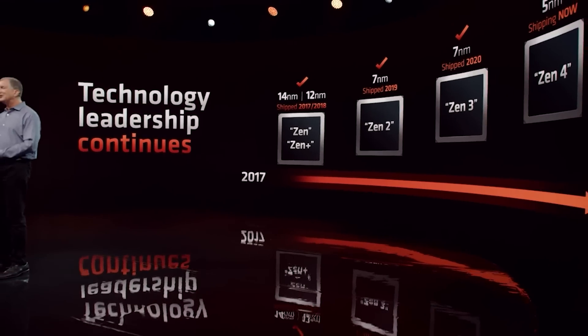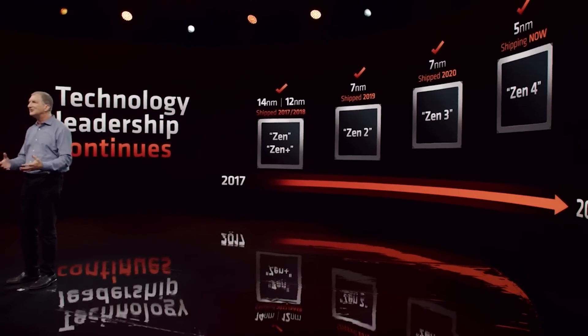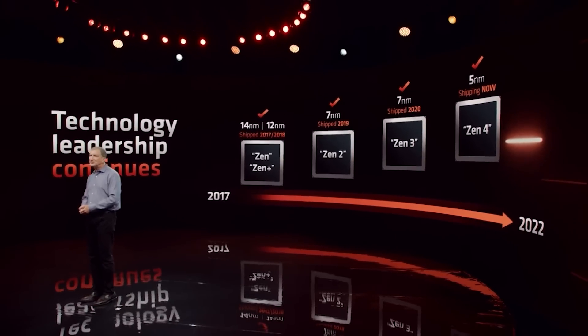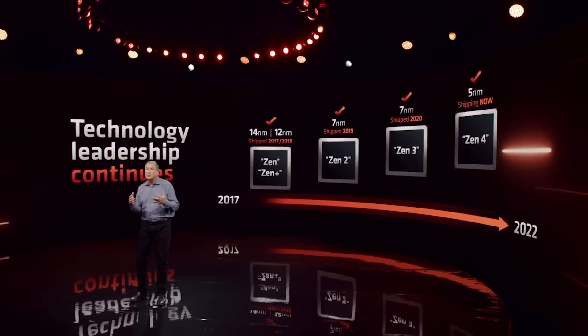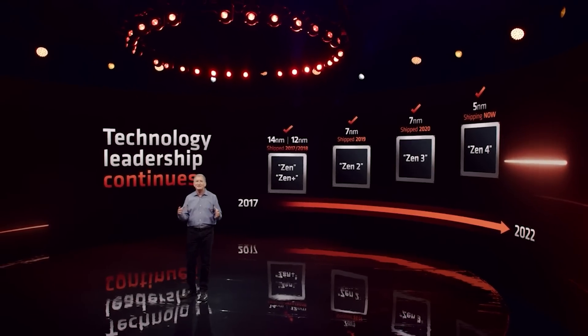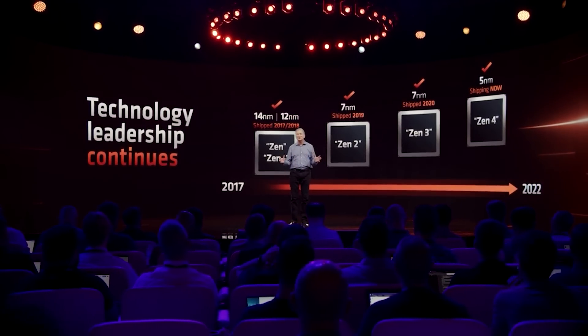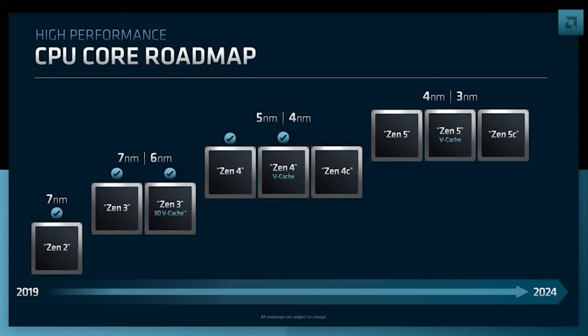Of course, it is worth noting that with Zen 5, to my personal understanding so far, we will see AMD basically employ a two-pronged strategy. 3NM will be for data center parts — I'm simplifying things here, I've spoken about this at length before — and then you will have 4NM for desktop. To my understanding, the desktop variants of Zen 5 Ryzen will top out at 16 cores, and it's going to be very interesting to see how AMD continues to move forward.